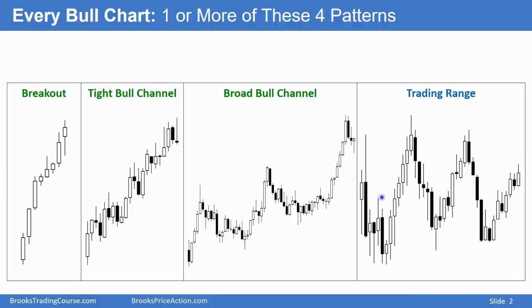And then finally, a trading range. The market is mostly sideways. Sometimes it has a new high, sometimes the market goes above prior highs, below prior lows, but it's mostly sideways. It's a channel because you can draw lines below and above, but it's a sideways channel.